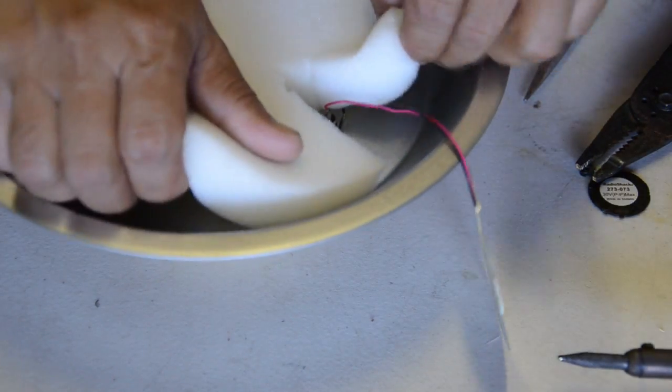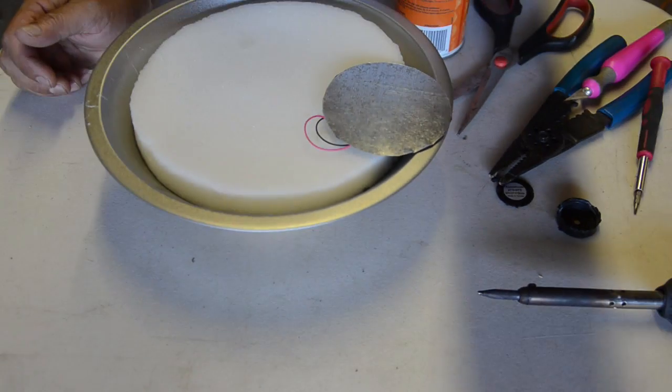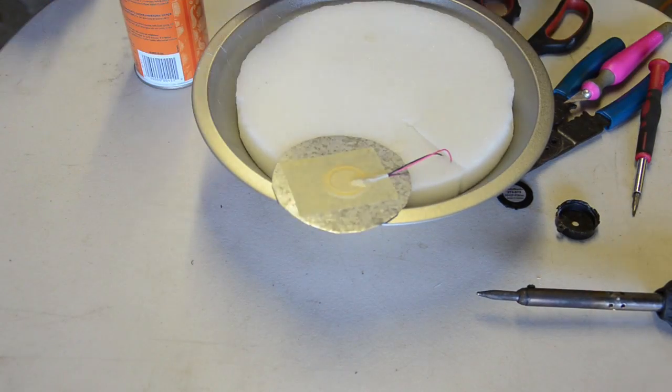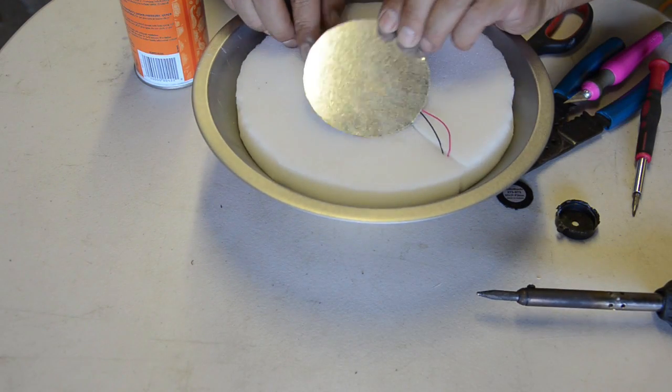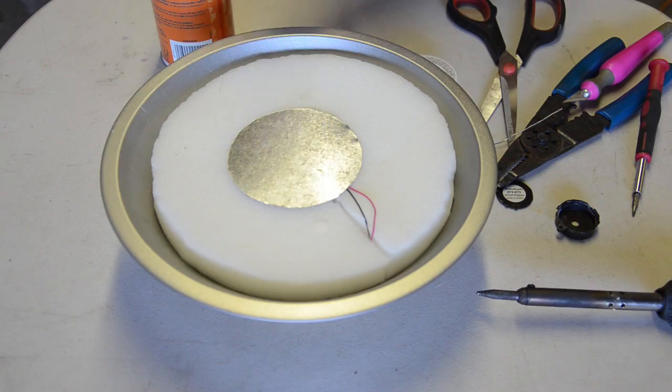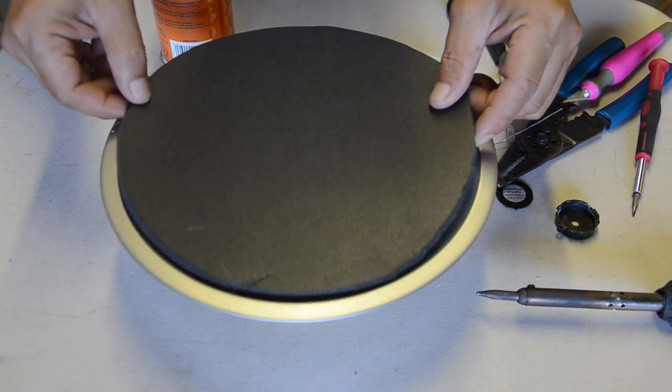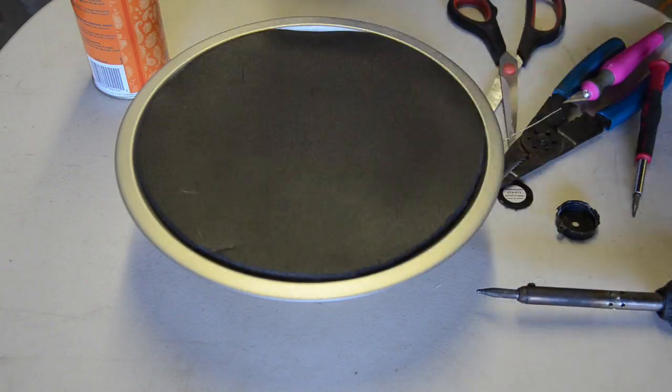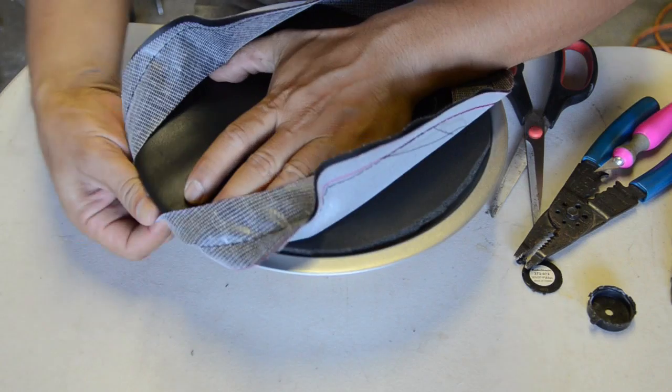Elmer's glue holds it all down. The reason why you want to do this is you want your foam and your material to stay in one place. You don't want it to vibrate and make extra vibrations within the drum pad itself. Just glue the high-density foam on there and this is the vinyl that I sewed up earlier.